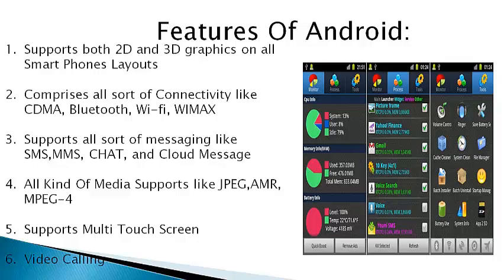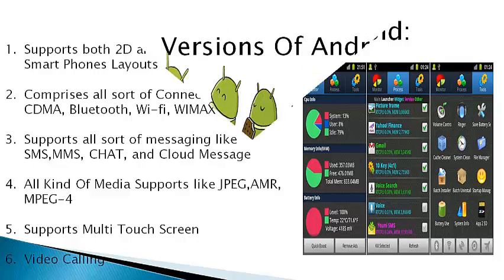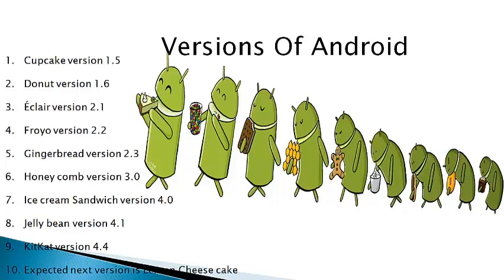Android gives all kinds of media support like JPEG, AMR, and MPEG-4. It also supports all sorts of multi-touch screens and video calling. There are different versions of Android, so let us have a quick look at them.